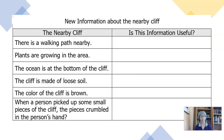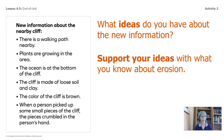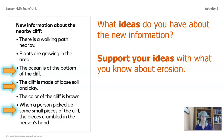What ideas do you have about the new list of information? Make sure we support our ideas with what you know about erosion — all the things that you've learned. Some of you said that the ocean is at the bottom of the cliff might be helpful, because we know that waves do cause erosion. And some of you circled that the cliff is made of loose soil and clay, because we know that loose materials erode more quickly. Others picked that when a person picked up some small pieces of the cliff, the pieces crumbled — that's evidence that it's not hard rock. So let's see how we can use these new pieces of information.